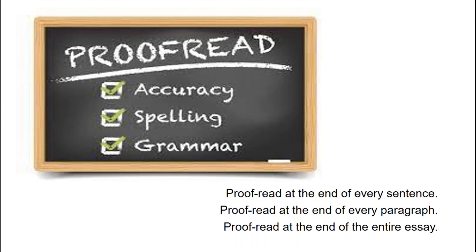All of this is quite similar to what I said in my Paper 1 video, but it just goes to show how fundamental this is for language and literature students. You should proofread your work to avoid mistakes surrounding accuracy, spelling and grammar. No one should be forgetting to proofread their work. My personal approach is to proofread at the end of every sentence, then at the end of every paragraph, and then at the end of the entire essay — so I'm constantly proofreading throughout.